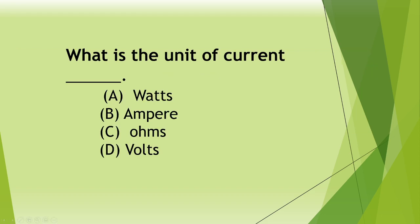What is the unit of current? A watts, B amperes, C ohms, D volts. Answer: B amperes.